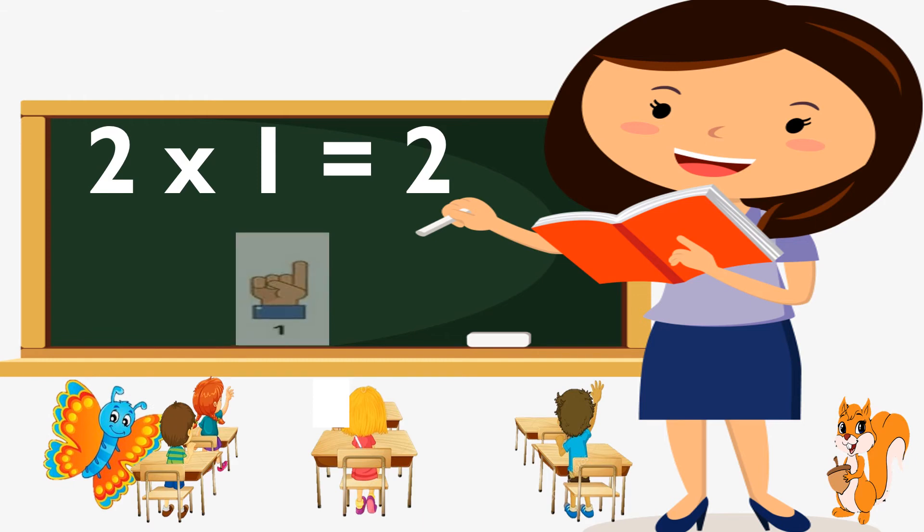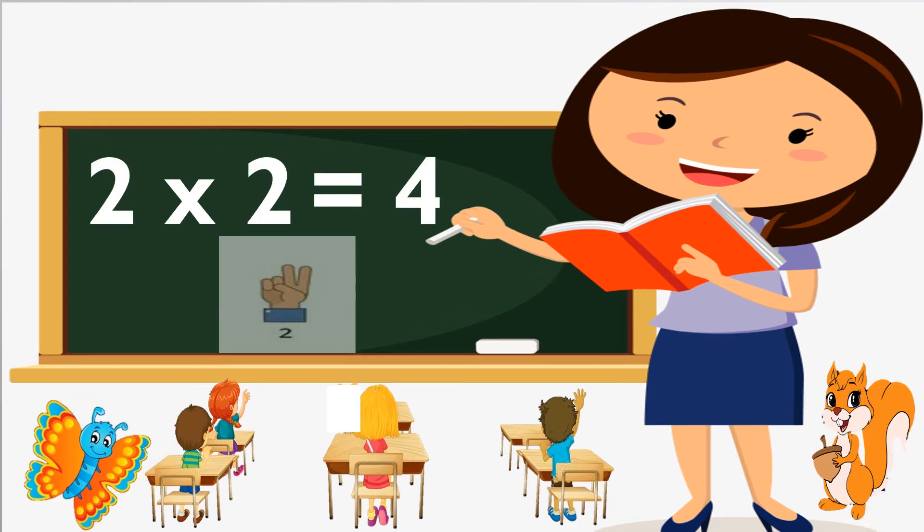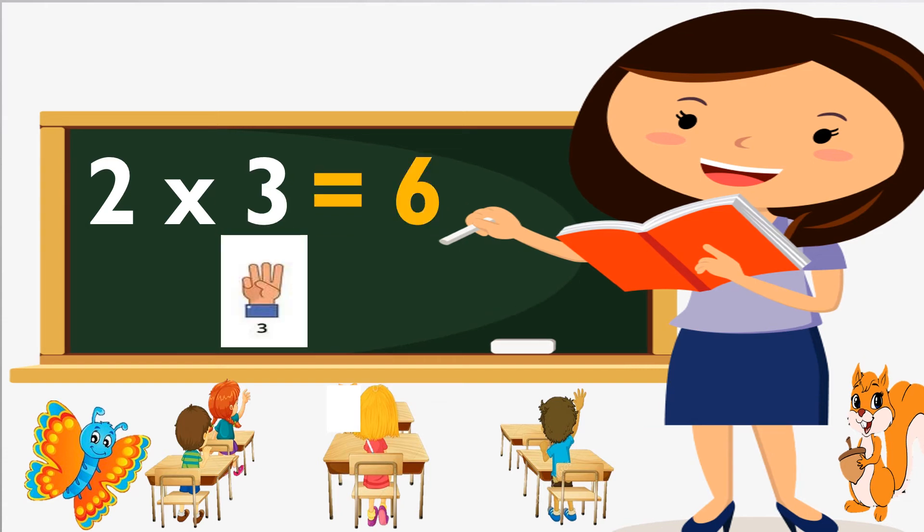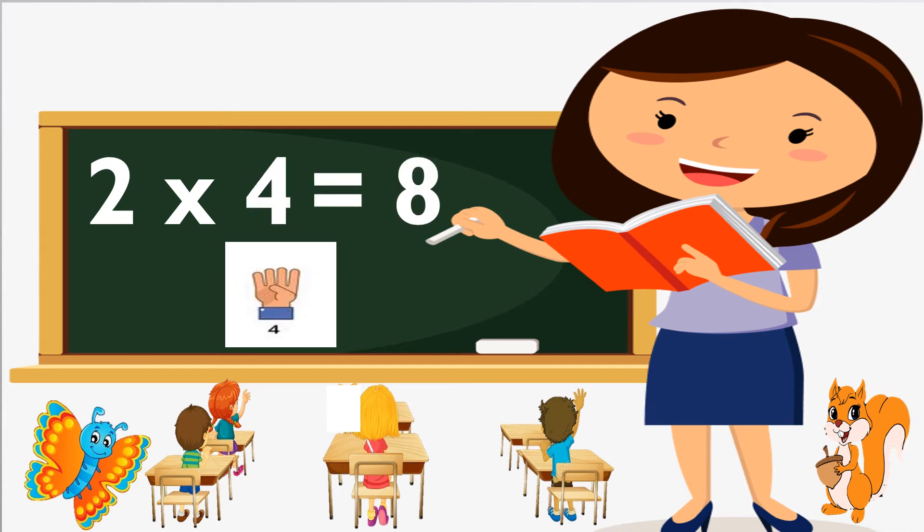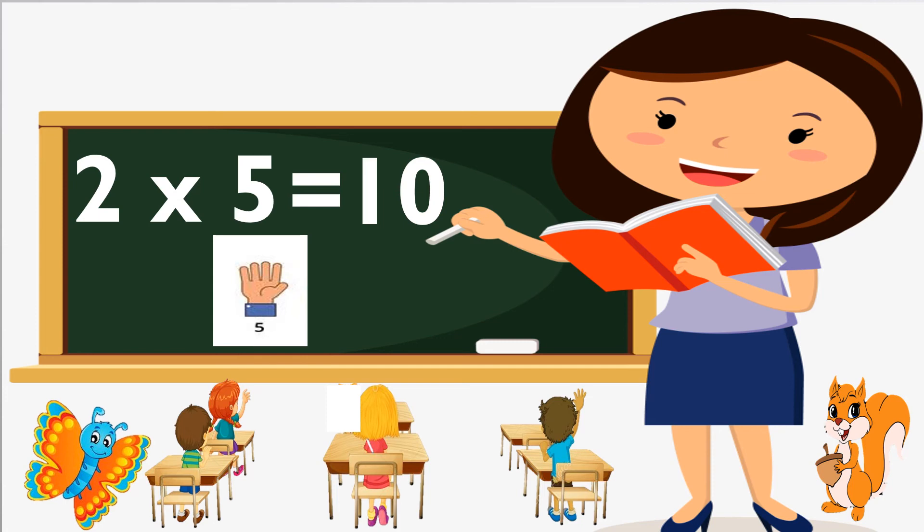2 ones are 2. 2 twos are 4. 2 threes are 6. 2 fours are 8. 2 fives are 10.